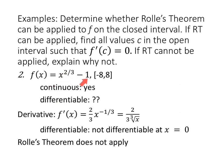F of X equals X to the two thirds minus one on the interval from negative eight to eight. X to the two thirds minus one is continuous from negative eight to eight. But is it differentiable? The derivative is two thirds X to the negative one third, which in radical notation is two over three times the cube root of X. This is not differentiable at X equals zero, and since zero is in our interval, the derivative does not exist in our interval. Rolle's Theorem will not apply. Continuous: yes. Differentiable: no. Done.